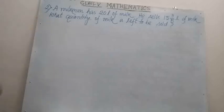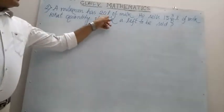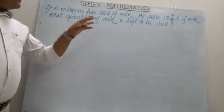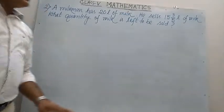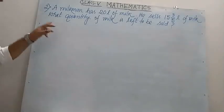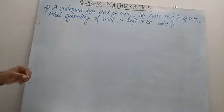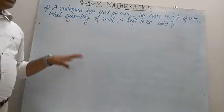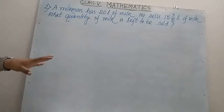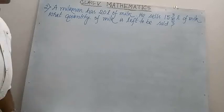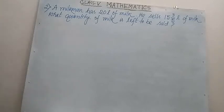Next, number 2. A milkman has 20 liters of milk. He sells 15 whole 3/5 liters of milk. What quantity of milk is left to be sold? Read the problem again: A milkman has 20 liters of milk. He sells 15 whole 3/5 liters of milk. What quantity of milk is left to be sold?